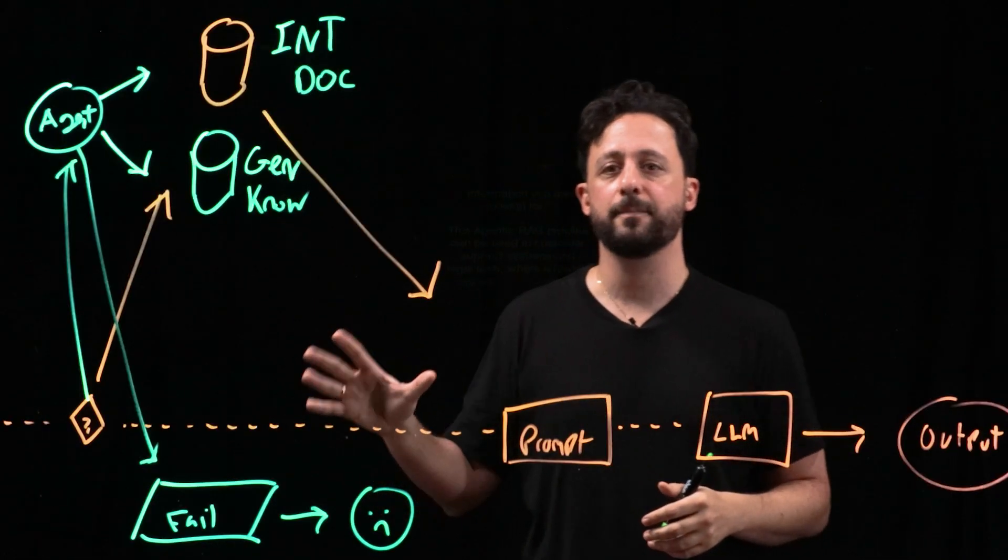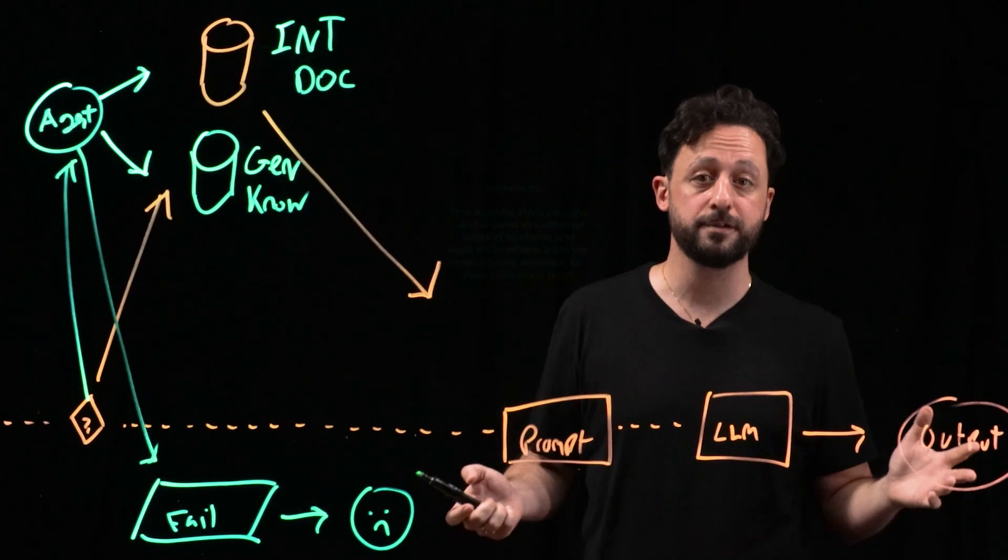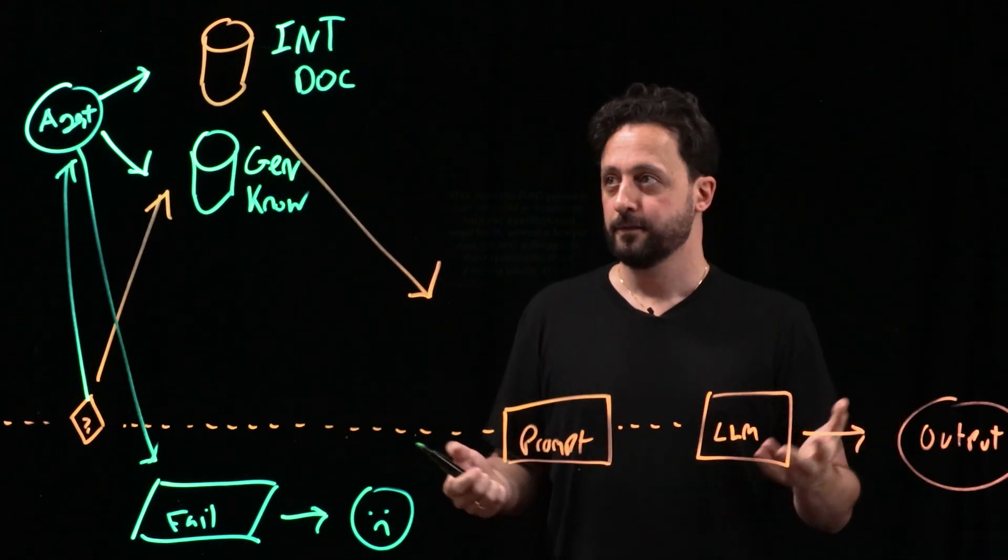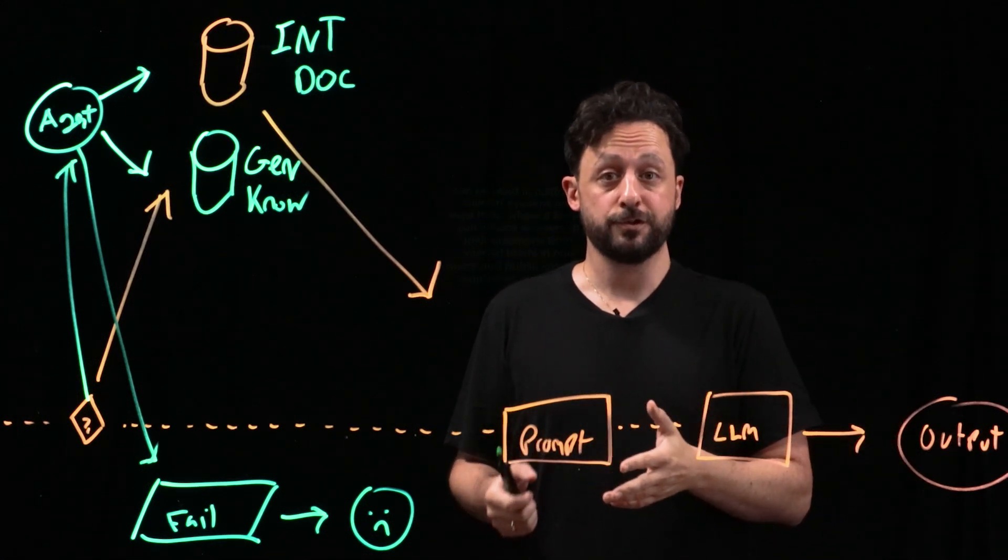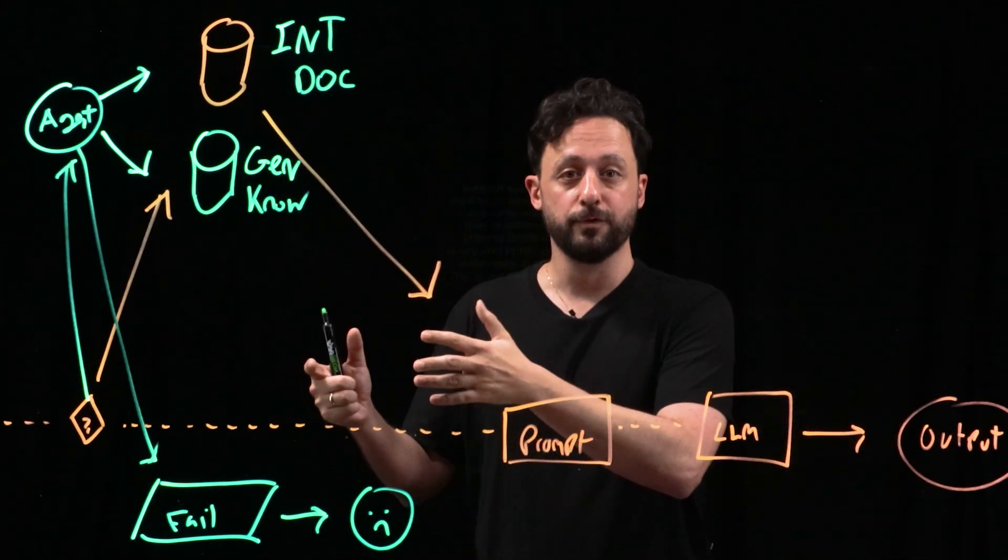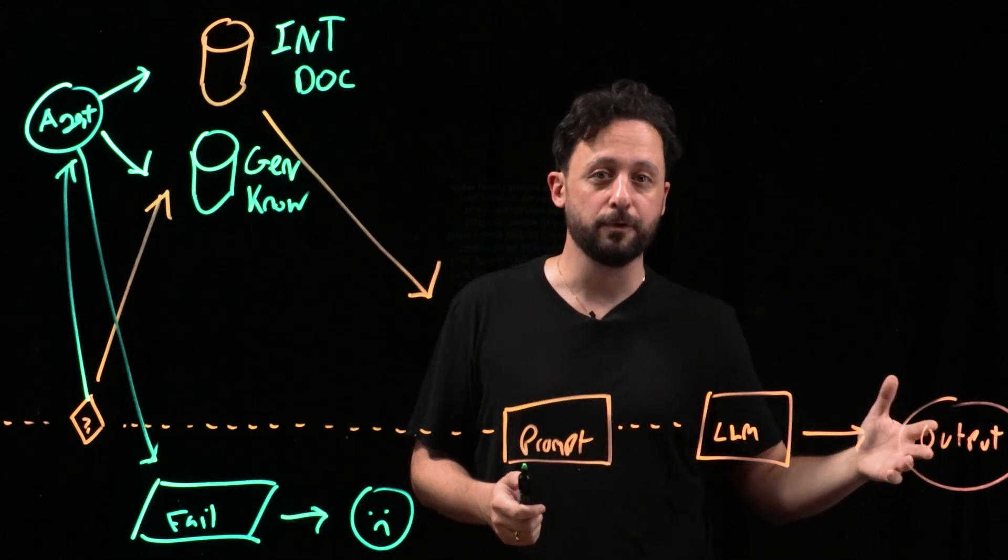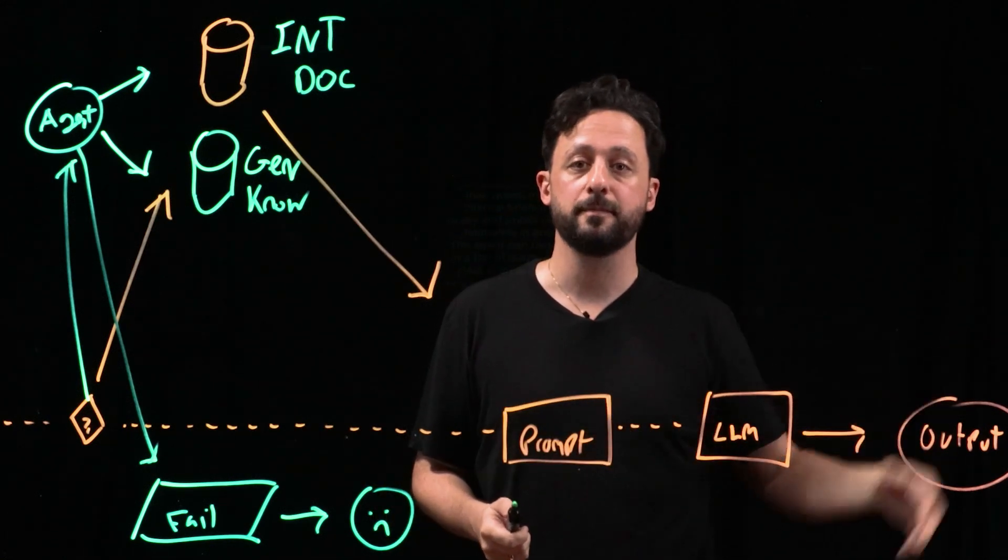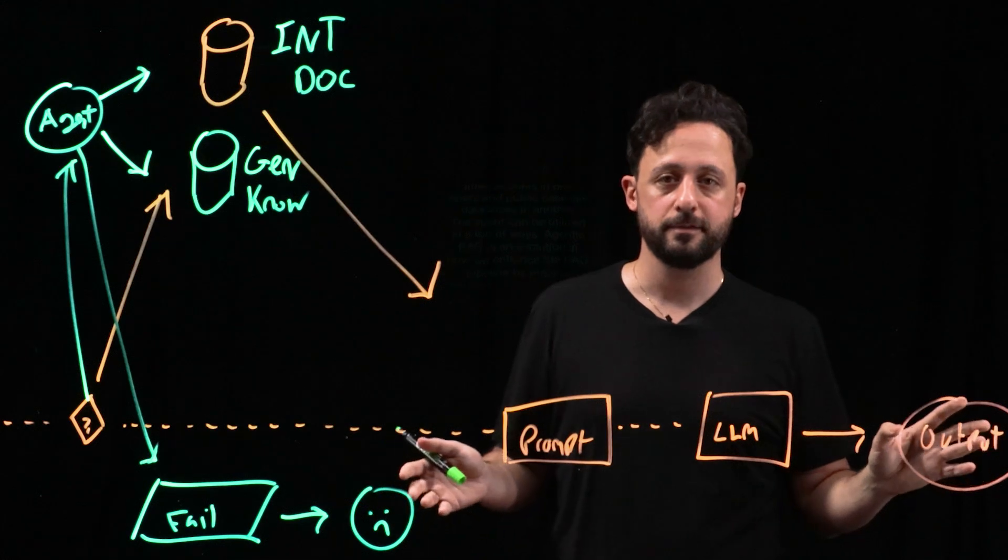This agentic RAG pipeline can be used in customer support systems and legal tech. For example, a lawyer can source answers to their questions from their internal briefs, and then in another query, just get stuff from public caseload databases. The agent can be utilized in a ton of ways.